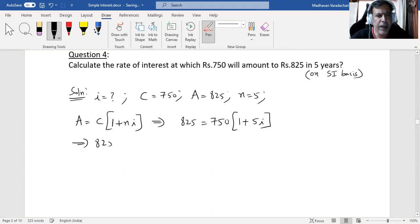Dividing both sides by 750, we get 825 by 750, which is 1.1 equals 1 plus 5i. Taking that 1 to the left side, we can say 0.1 equals 5 times i, which means i is 0.1 divided by 5.